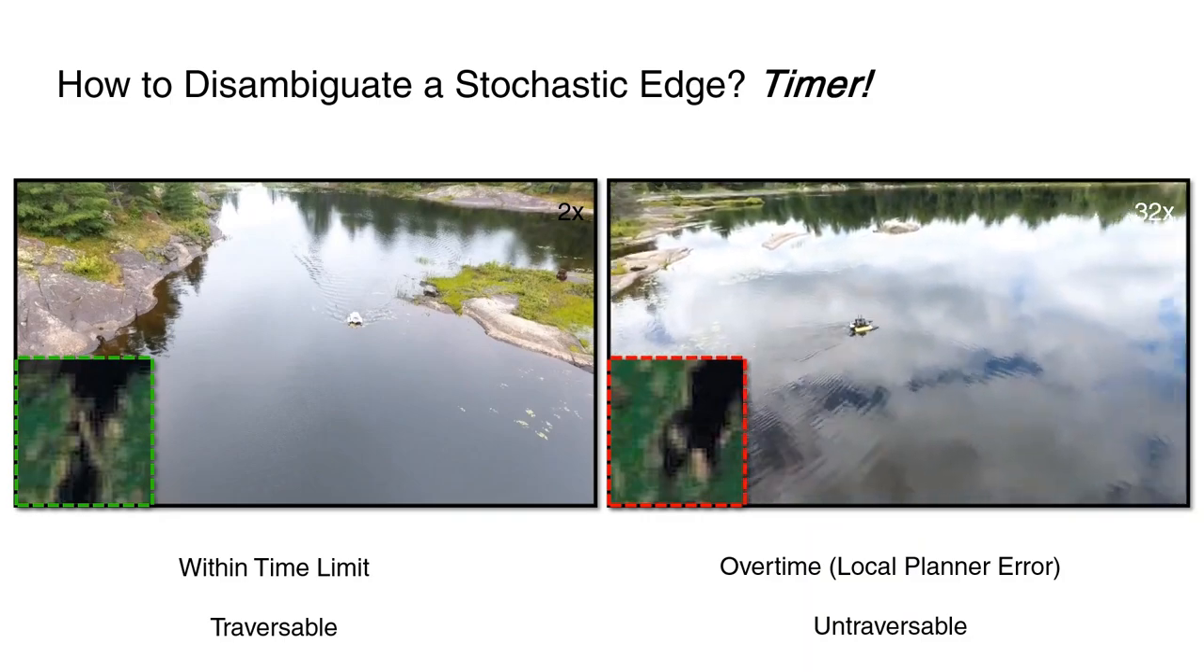An example shows that on the left, the robot manages to cross a narrow point in time, hence the edge is traversable. On the right, the robot struggles to identify a forward path between the large rocks and eventually treats this stochastic edge as untraversable.